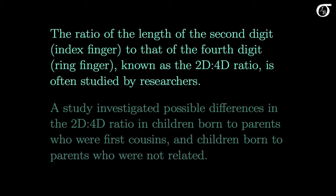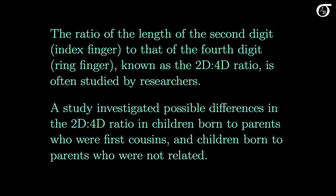Let's take a brief look at an example. The ratio of the length of the second digit, the index finger, to that of the fourth digit, the ring finger, known as the 2D to 4D ratio, is often studied by researchers. This ratio is related to fetal exposure to testosterone, and it has been linked to characteristics like aggression. A study investigated possible differences in the distribution of the 2D to 4D ratio in children born to parents who were first cousins, and children born to parents who were not related. The researchers investigated the distribution for males and females, but we'll only look at males in this video.